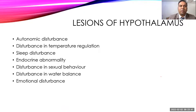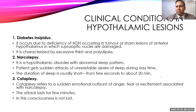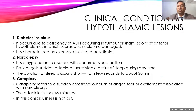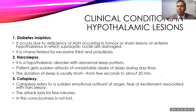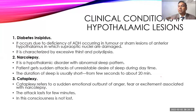Applied aspects of hypothalamic lesions include autonomic disturbances, temperature dysregulation, sleep disturbances, endocrine abnormalities, disturbances in sexual behavior, water balance issues, and emotional stress disorders. One important condition is diabetes insipidus — caused by deficiency of ADH due to tumor or lesion in the entire hypothalamus or the supraoptic nucleus. This leads to severe urine formation, excessive thirst (polydipsia), and excessive urination (polyuria) — distinct from diabetes mellitus, which involves elevated glucose.